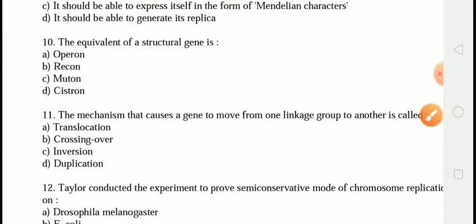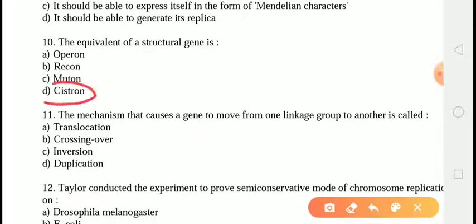The next question is: the equivalent of a structural gene is? The correct answer is answer D, that is cistron. A cistron is a length of DNA that contains the information for coding a specific polypeptide chain or a functional RNA molecule. Therefore, cistron is a unit of function.